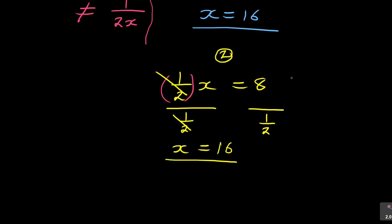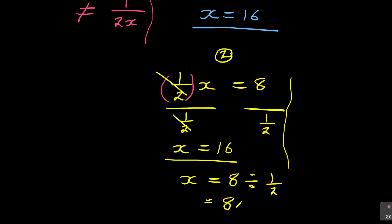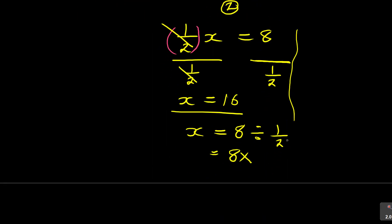What the calculator is doing: x = 8 divided by 1/2. You can convert the division to multiplication and invert the fraction — 1/2 becomes 2/1. So you now have 8 × 2, which gives you 16. That is the correct answer.